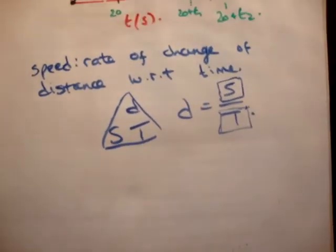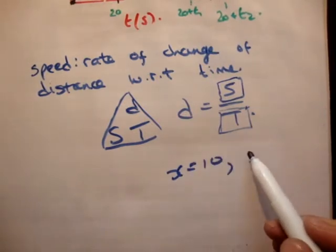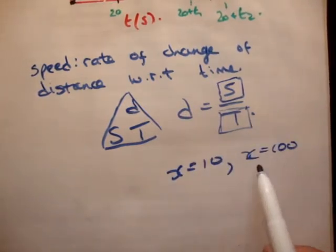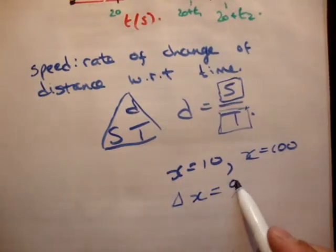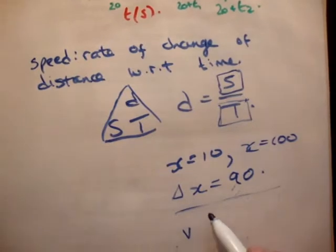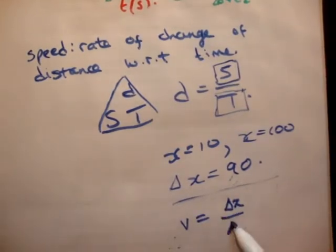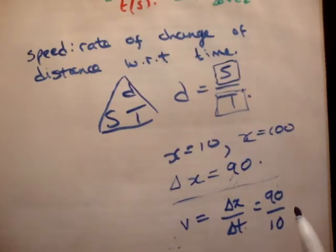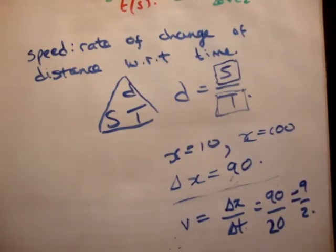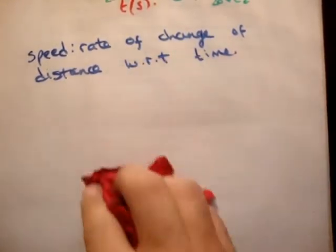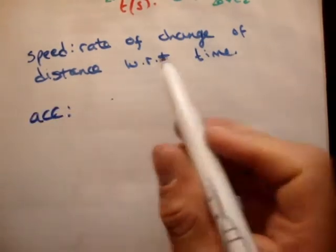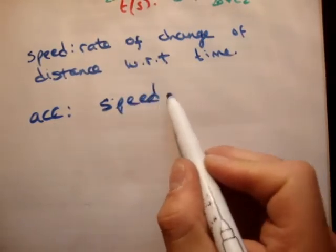You would say the exact same thing for your distance. It began at X equals 10 meters, it finished at X equals 100 meters. The distance is equal to the delta X, which would be 90 meters. So we might have that the speed equals delta X over delta T equals 90 over 20. So we're saying that speed is a rate of change of distance with respect to time. Similarly, acceleration is a rate of change of speed with respect to time.